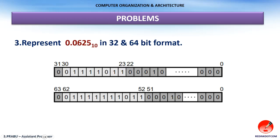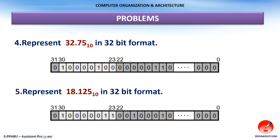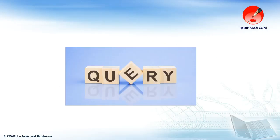Problem 3: 0.0625. Convert it to binary equivalent and represent as 32-bit and 64-bit. A few more problems are also provided — you can cross check your answers. Please make your query in the comment section if you have any clarification. Thank you.